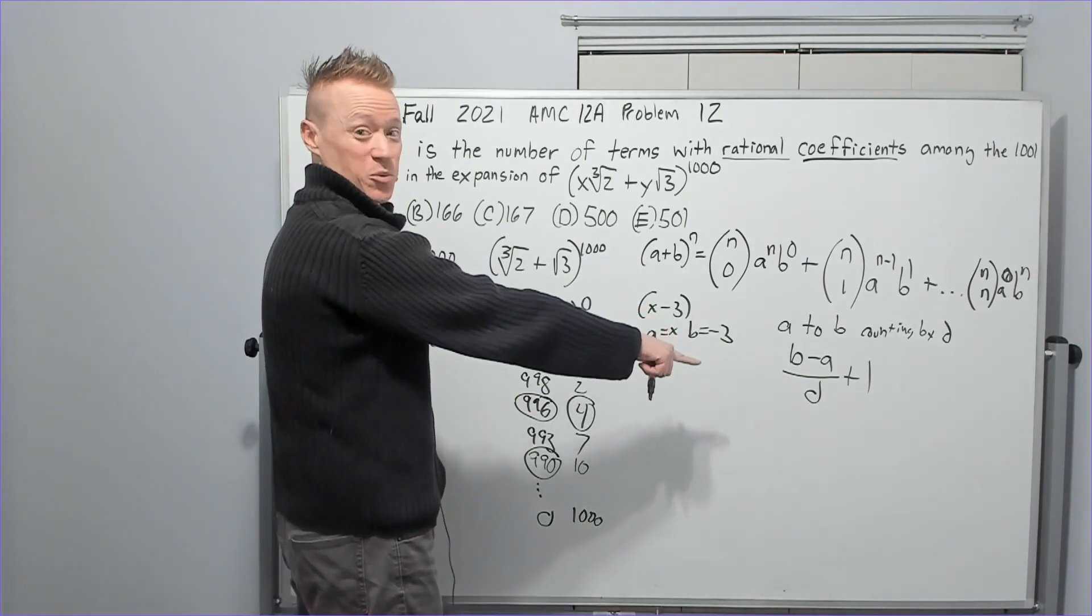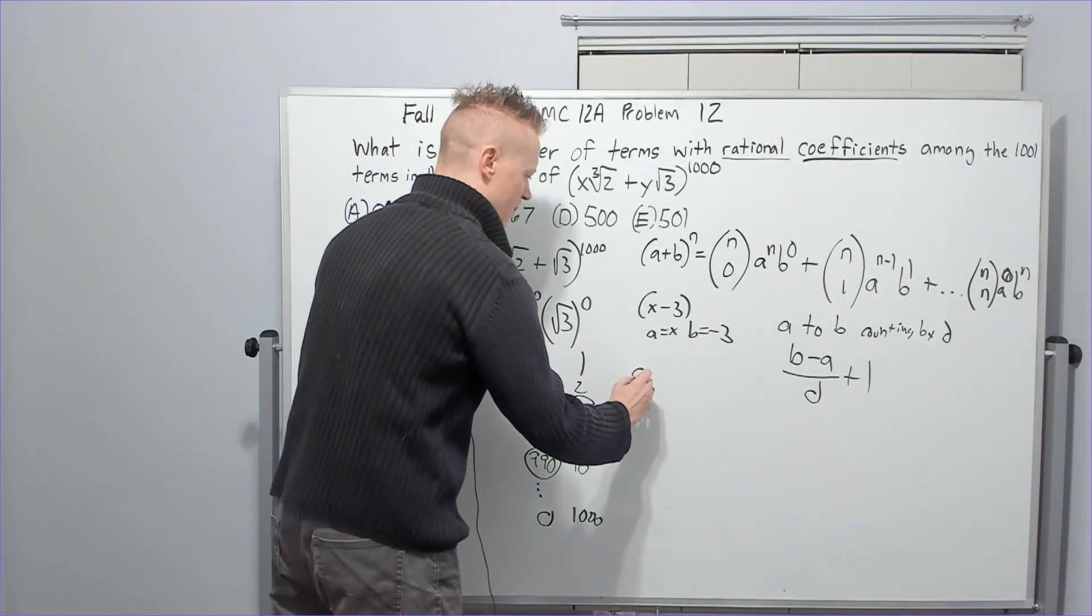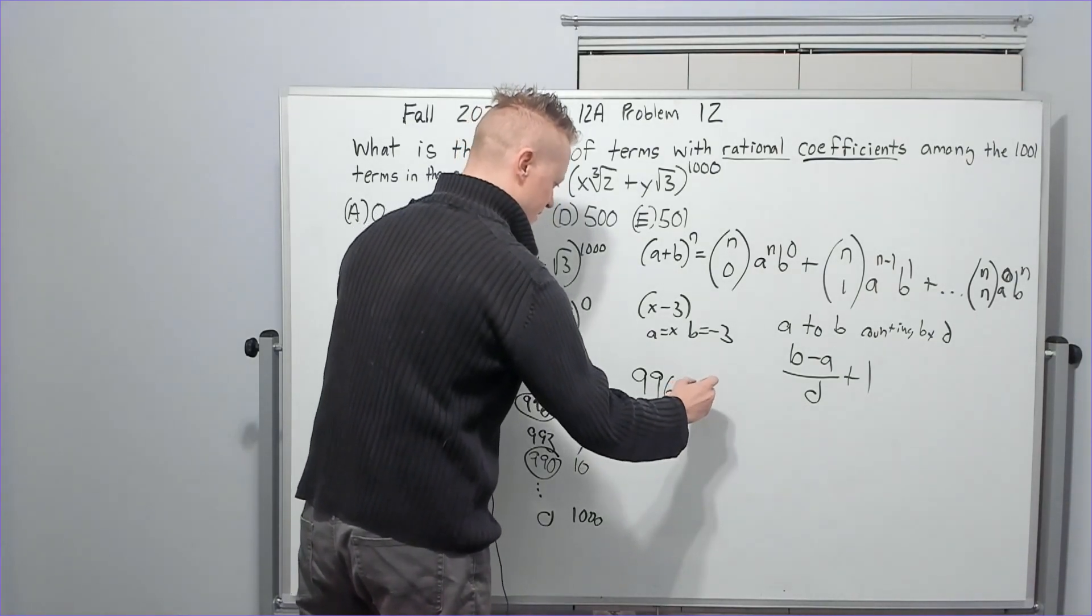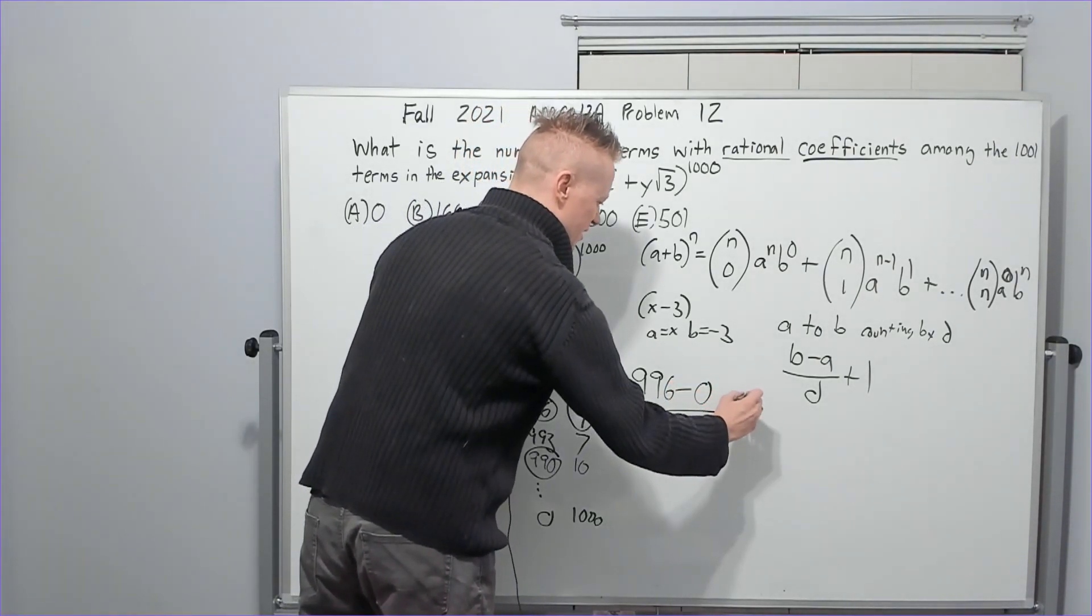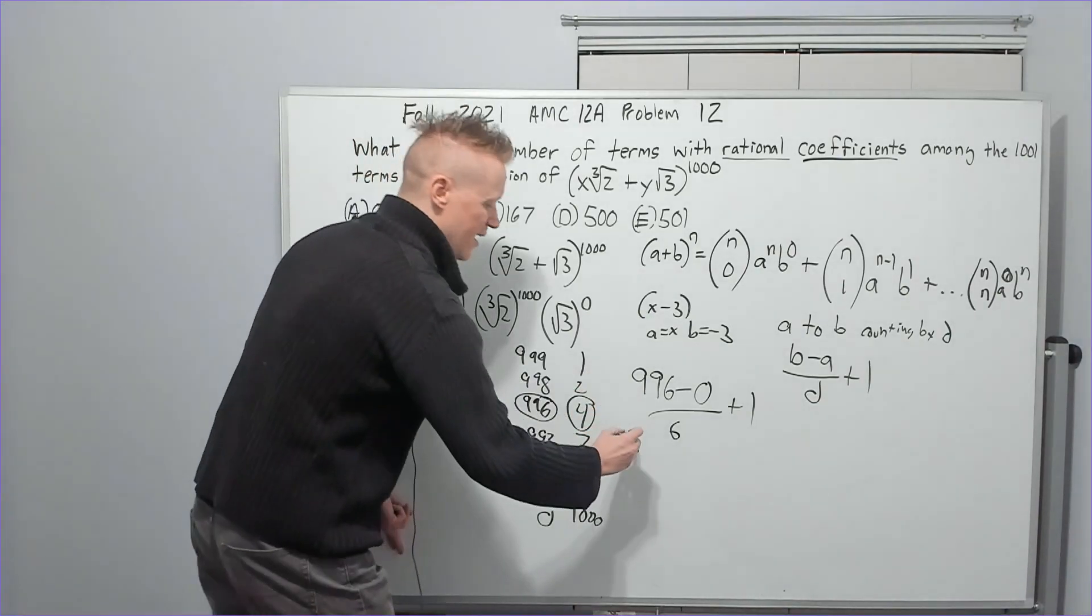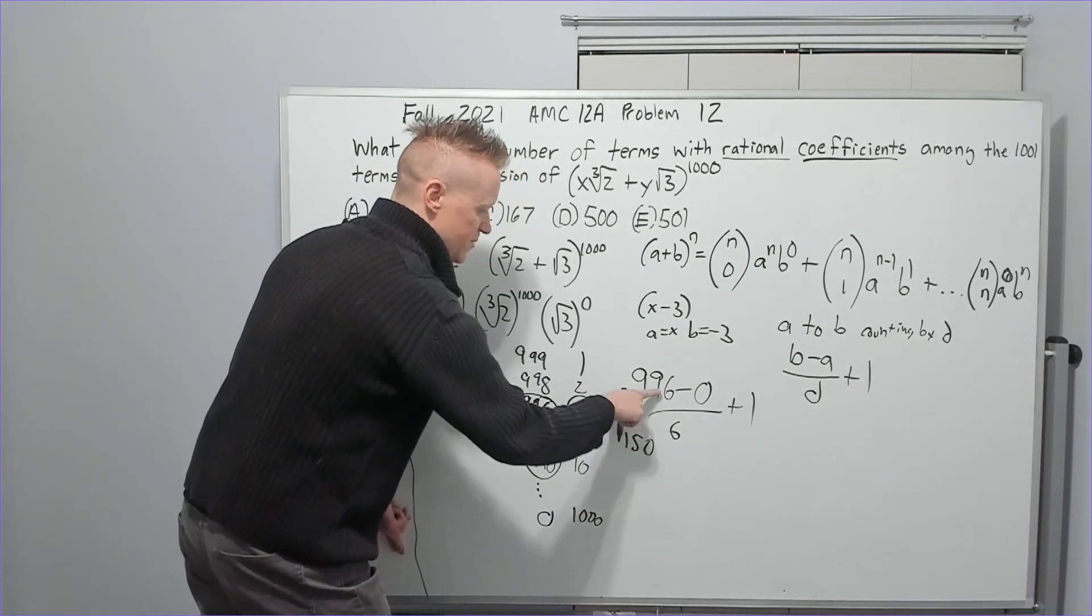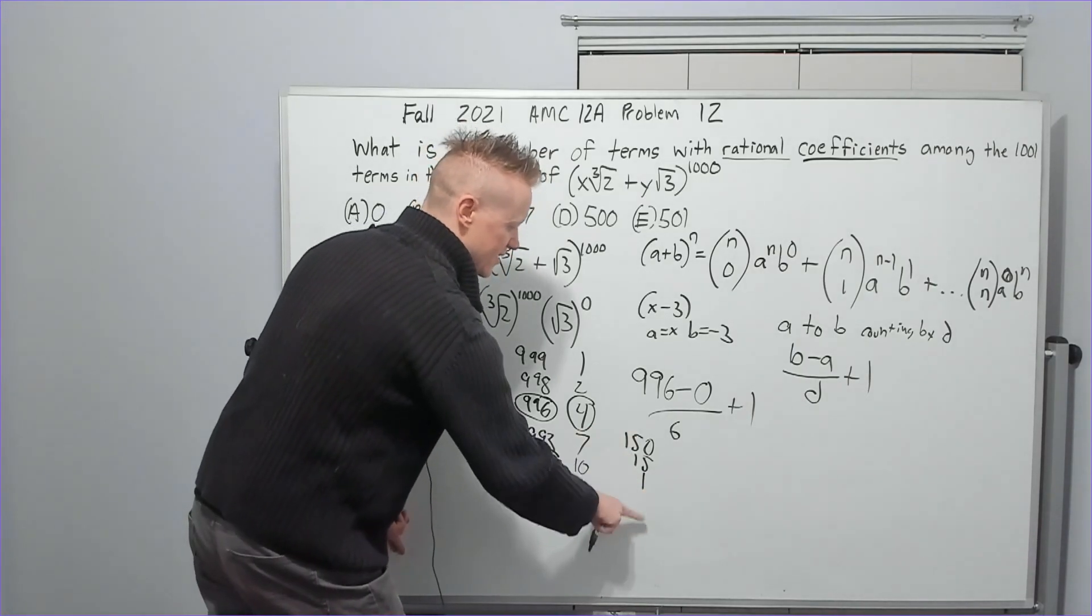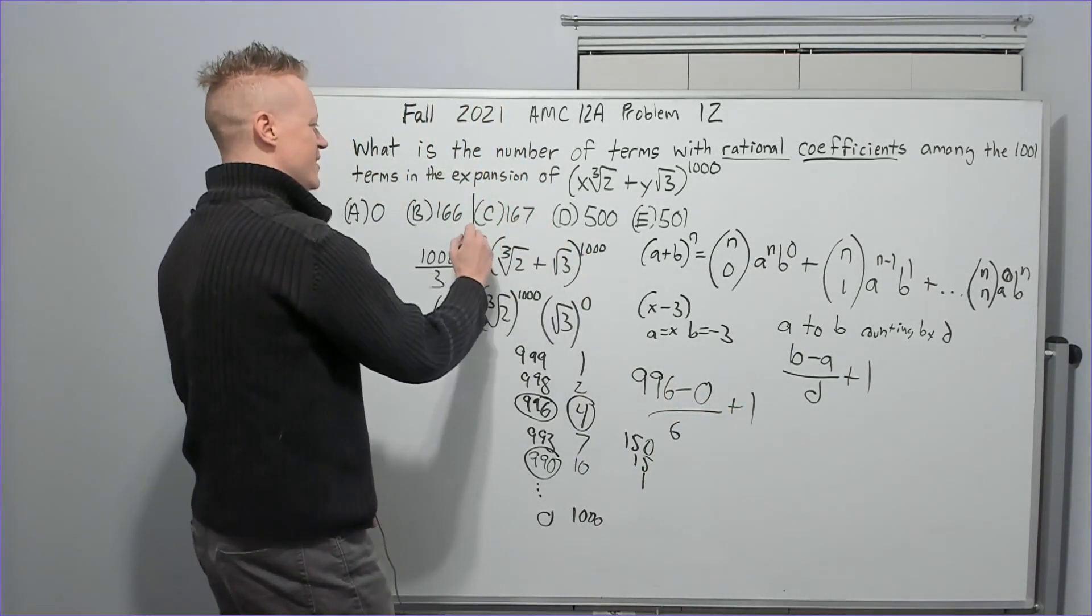All of the numbers from A to B, counting by D, D being the common difference, is going to be B minus A over D plus 1. So it's also arithmetic series. You can do it with that too, the number of terms in the arithmetic series. But this is just the fastest way to get what we want. 996 minus 0 over 6 plus 1. 6 goes into 900, 150 times. It goes into 90, 15 times. It goes into 6 once. 166 plus 1, 167.